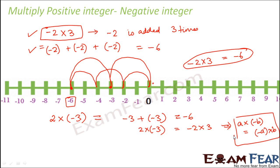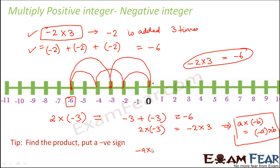Whenever you multiply a positive integer with a negative integer, find the product normally ignoring the sign, then put a negative sign. If one of them carries a negative sign, the product will always be negative. For example, minus 9 into 6: the product is 54, and since one is negative the result is minus 54. Similarly, 6 into minus 9 is also minus 54.